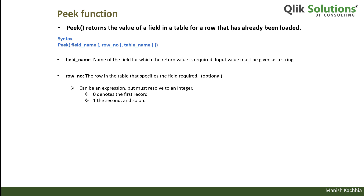When we say zero, that means it's the first row. In Qlik, the index of a table row starts from zero instead of one. So zero means first row, one means second row, two means third row, and so on.